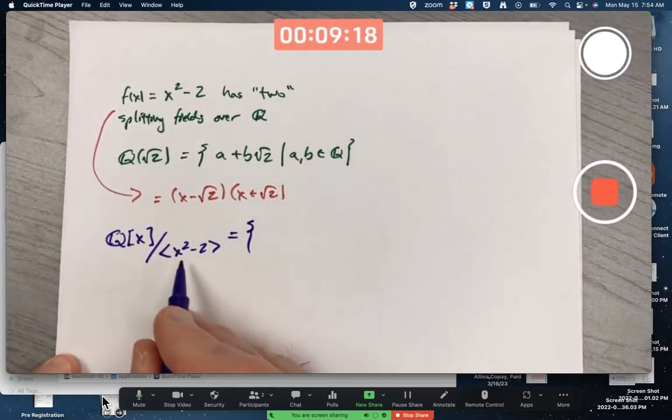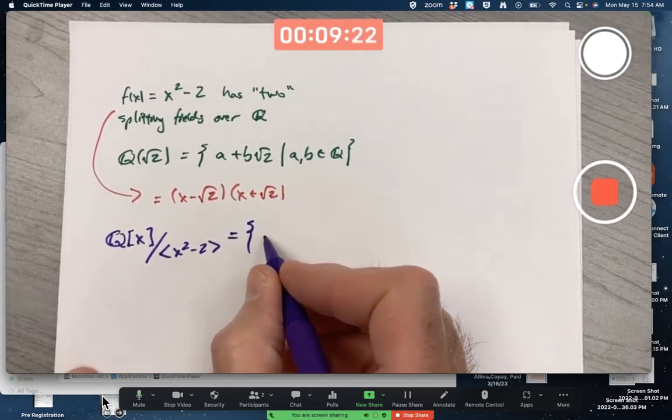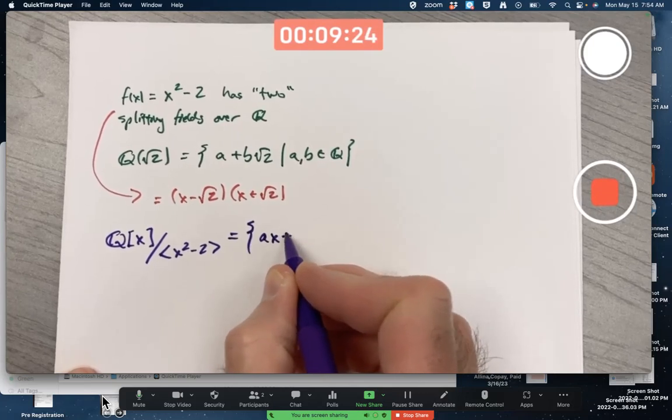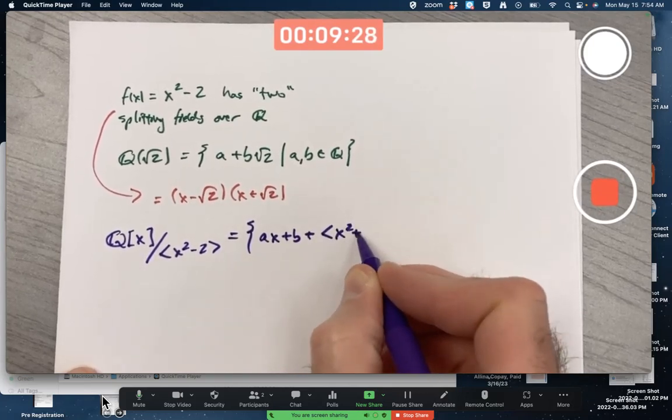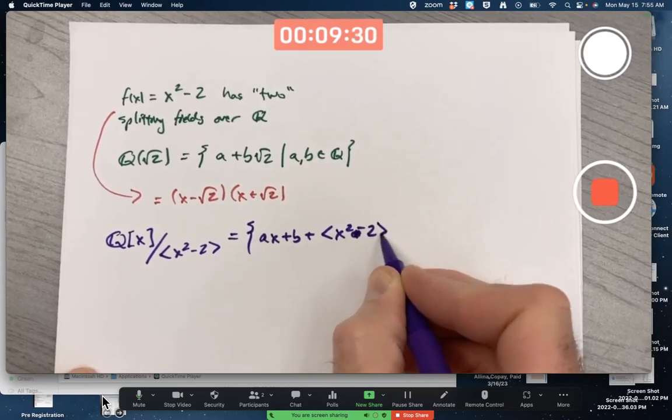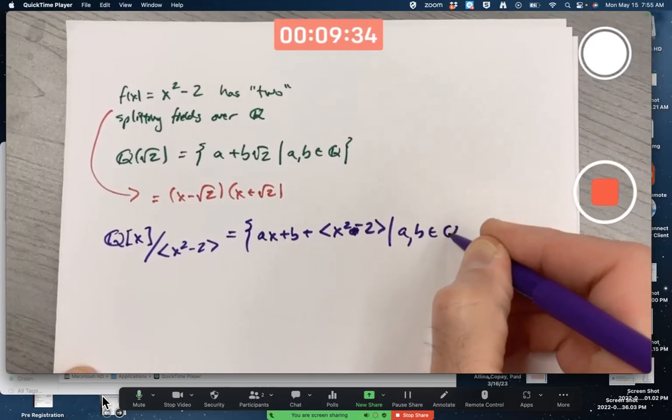What are the elements of this? As we've seen, since the degree of this is 2, we can ultimately simplify them to linear representatives of cosets: ax + b + <x² - 2>, that principal ideal, as a and b vary over the rationals.